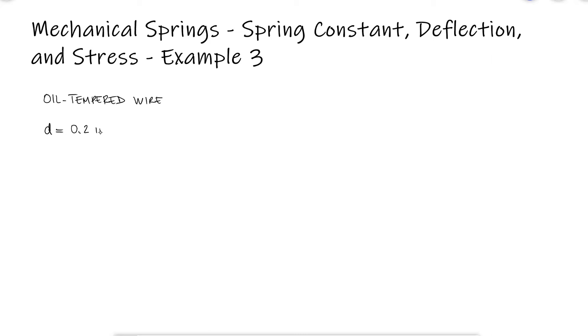A helical compression spring is made with oil-tempered wire with wire diameter of 0.2 inches, mean coil diameter of 2 inches, a total of 12 coils, and a free length of 5 inches with squared ends.